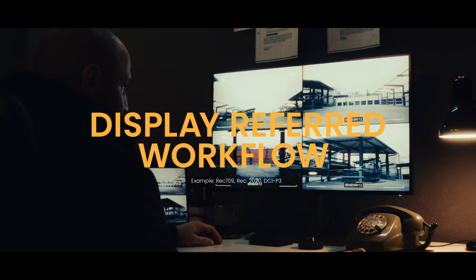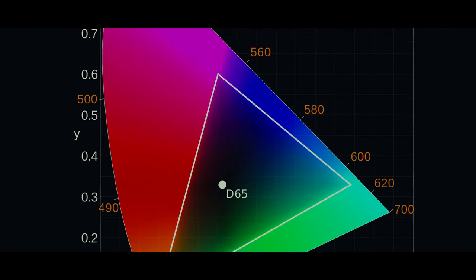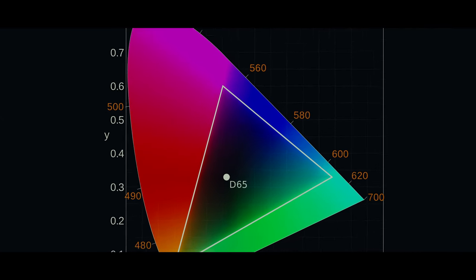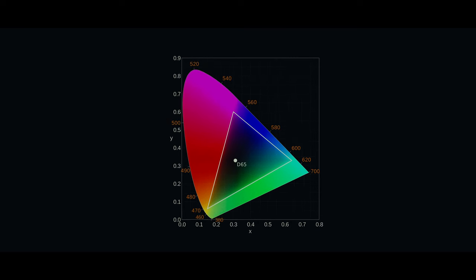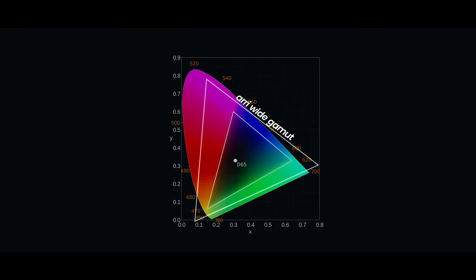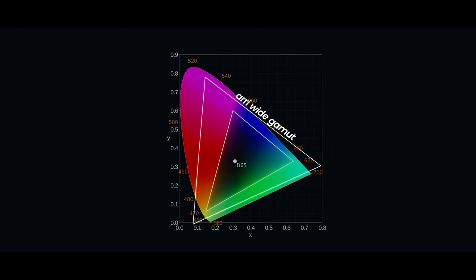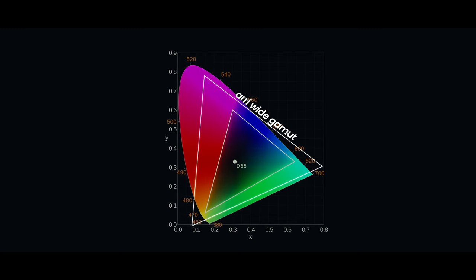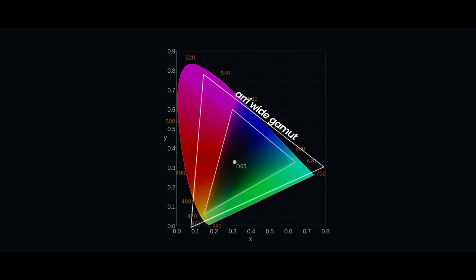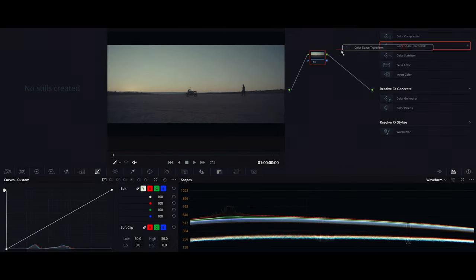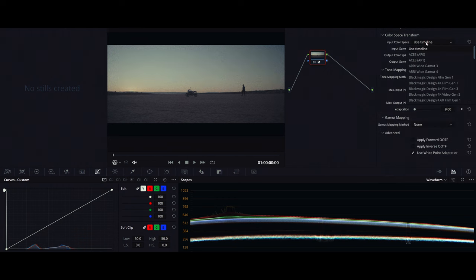Colorists and film professionals prefer grading in scene-referred color spaces, because camera log and raw were invented to capture footage with more flexibility and dynamic range. Camera color spaces, or scene color spaces, are designed to be bigger and wider. It naturally makes sense to manipulate the image in a bigger color space before the data is converted to a smaller one. Let's take a quick look inside DaVinci Resolve to see what I mean.